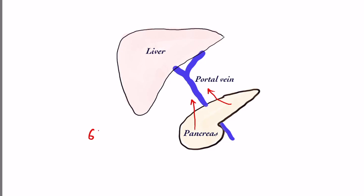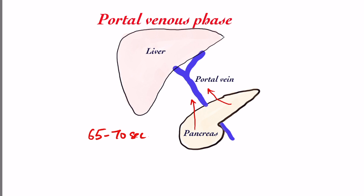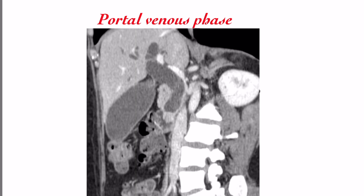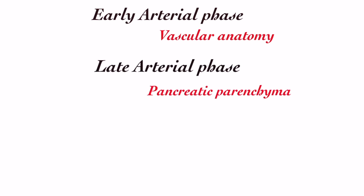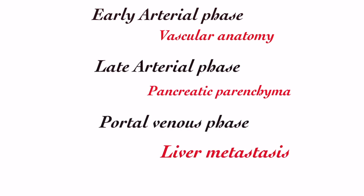The alimentary tract including the pancreas has venous drainage into the portal vein to the liver. When imaging is taken after 65 to 70 seconds, the portal venous phase begins — the dye has passed through the parenchyma, entered the portal vein, and reached the liver. The liver has 75% blood supply from the portal vein and 25% from the hepatic arteries, so the liver enhances more in the portal phase and less in the arterial phase, appearing bright in the portal phase. Liver metastases are supplied exclusively by arteries, so they appear hypodense in the portal venous phase and are easily detected. In summary: early arterial phase is for vascular anatomy, late arterial phase is for pancreatic parenchyma, and portal venous phase is for liver metastases.